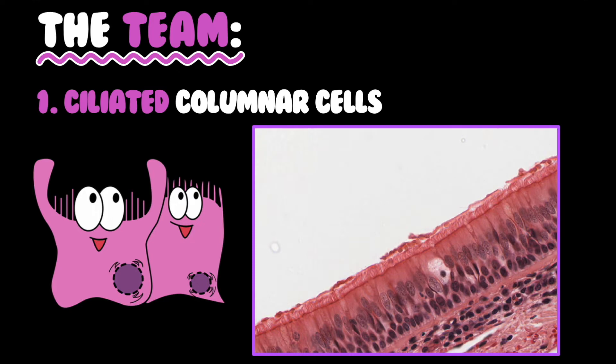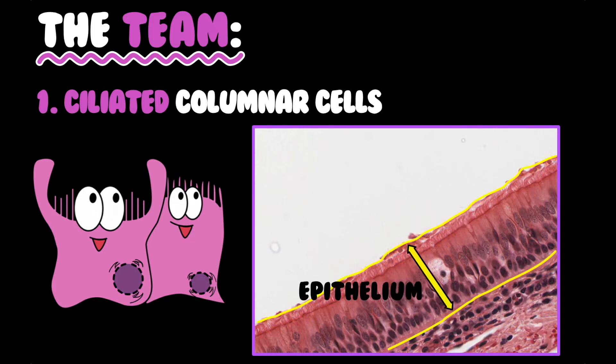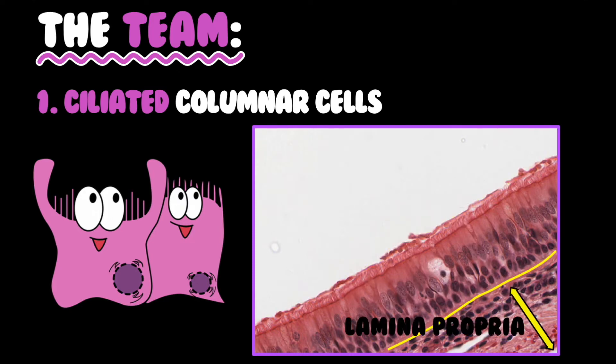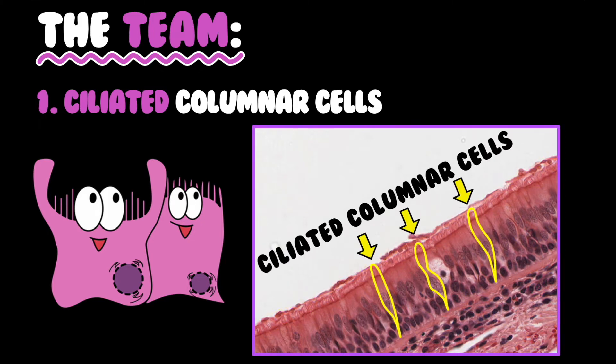This is our respiratory mucosa — our epithelium, the lamina propria, and the cilia. These are our ciliated columnar cells.